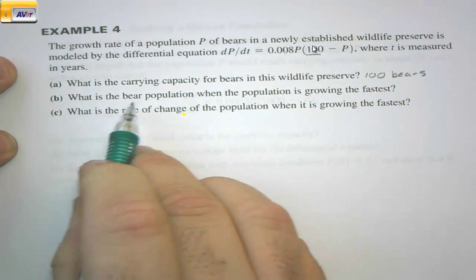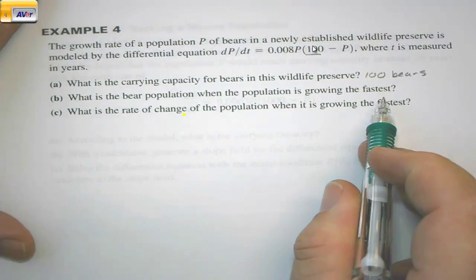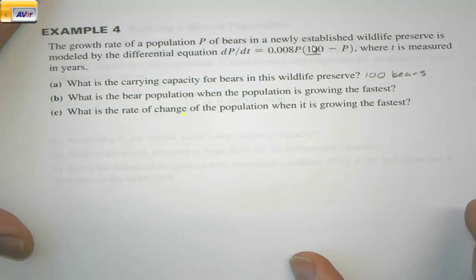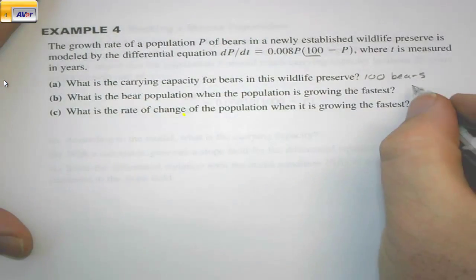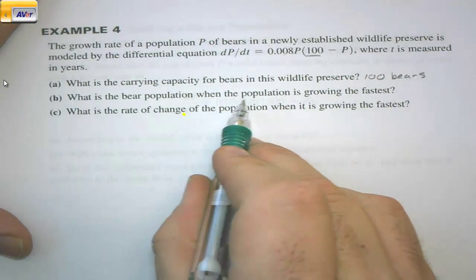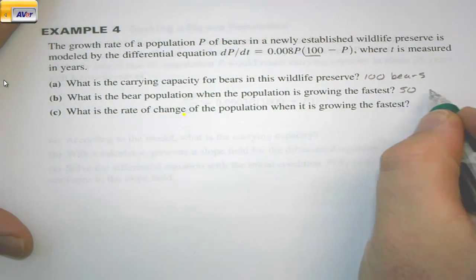What is the bear population when the population is growing the fastest? The population grows the fastest when the population is half the carrying capacity. So what is the bear population when the population is growing the fastest? 50 bears.